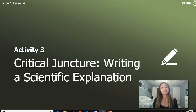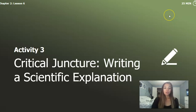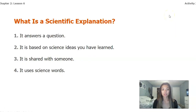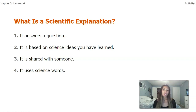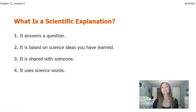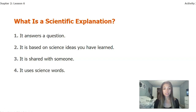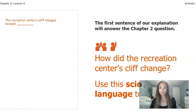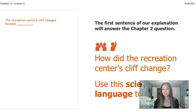We're on our very last activity for lesson 2.6 — writing a scientific explanation based on everything we've talked about with the cliff changing. What is a scientific explanation? There are important pieces: one, it answers a question; two, it's based on science ideas you've learned from slides, readings, models, and investigations; three, it's shared with somebody; and four, it uses science vocabulary we've gone over. The first sentence of our explanation will answer our chapter two question: how did the recreation center's cliff change?